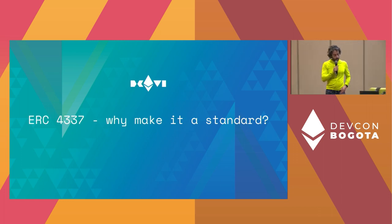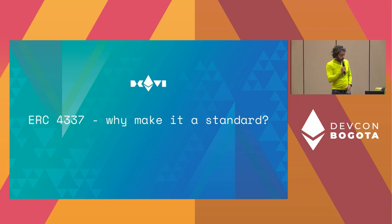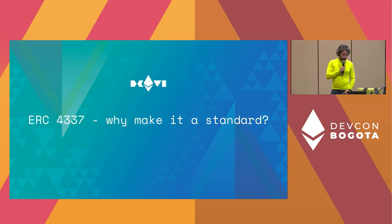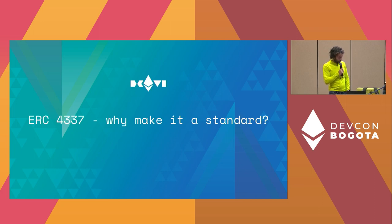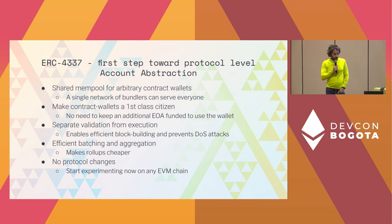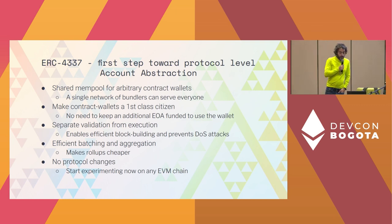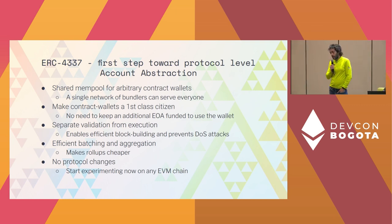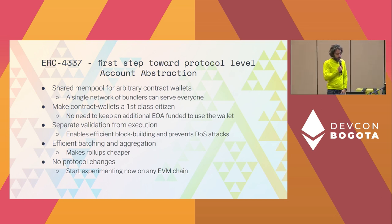A little bit about ERC 4337, which is the standard we've been working on. This is the first step towards protocol-level account abstraction. The nice thing about our approach is that it doesn't require any change to the rules of consensus, so we can experiment for free and don't have to solve governance in advance.